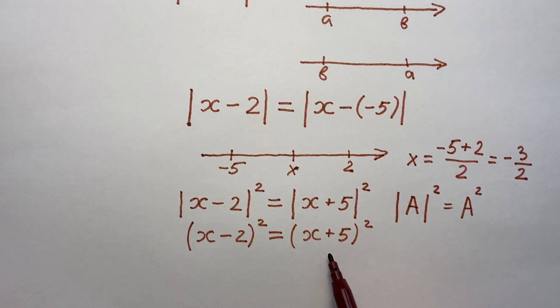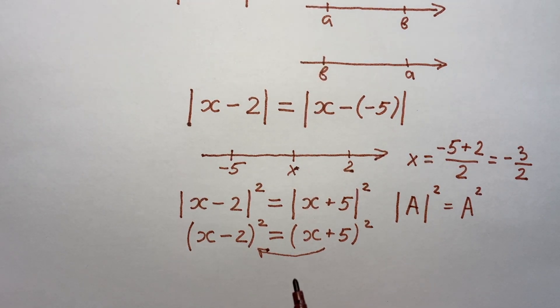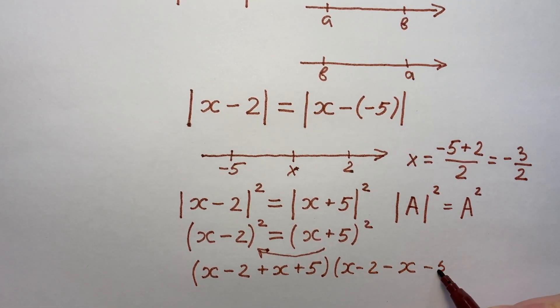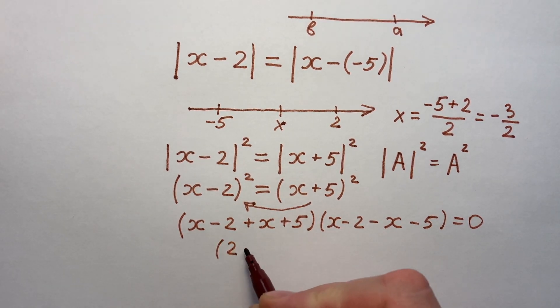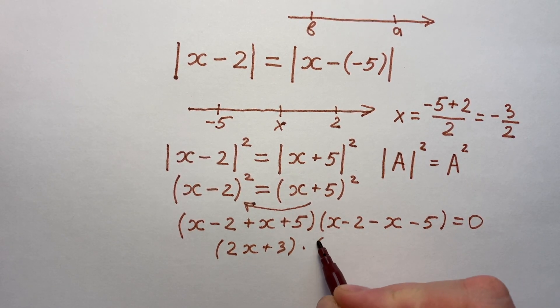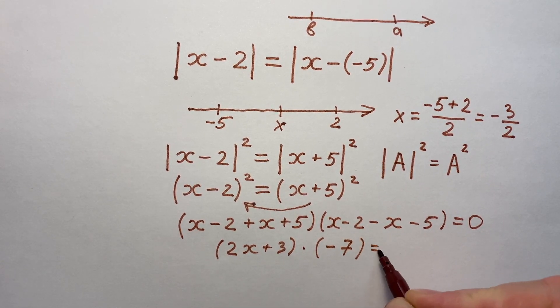Now, let's put the right side of this equation to the left side and write this equation like difference of two squares. And here we have bracket X minus 2 plus X plus 5 times X minus 2 minus X minus 5, and it equals zero. And then we have the first bracket 2 times X plus 3, and in the second bracket X minus X deleting minus 7, and it equals zero.